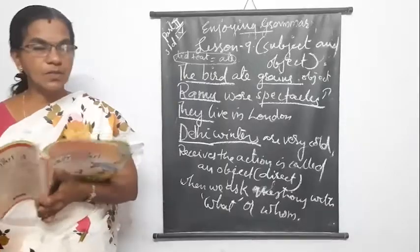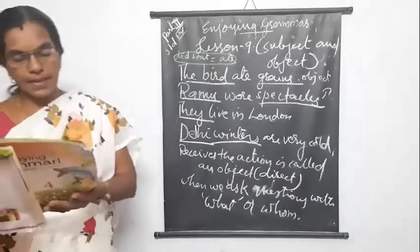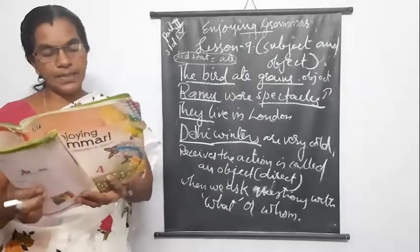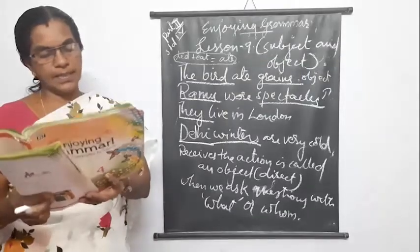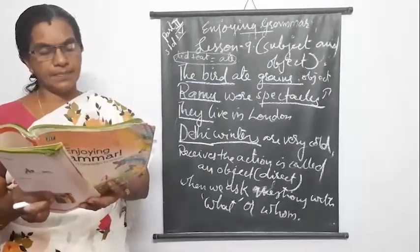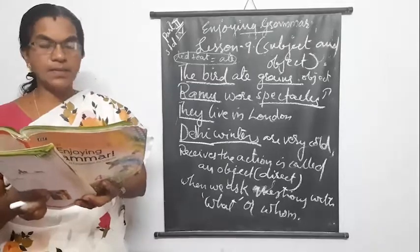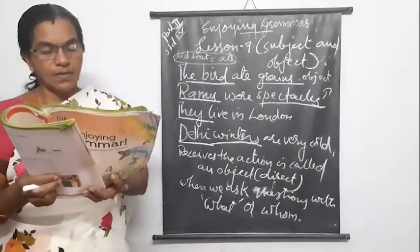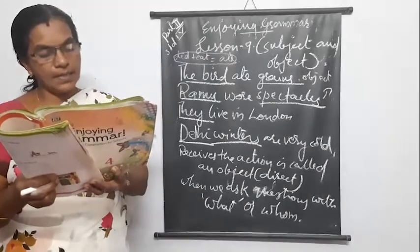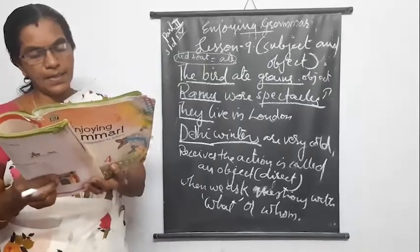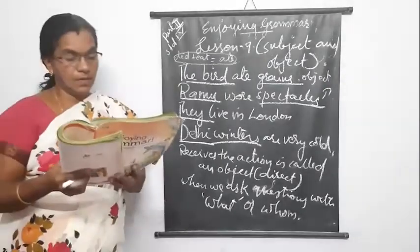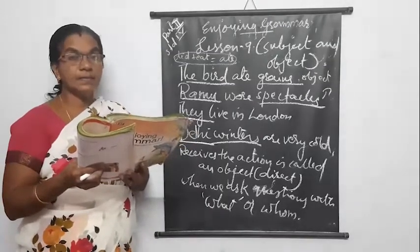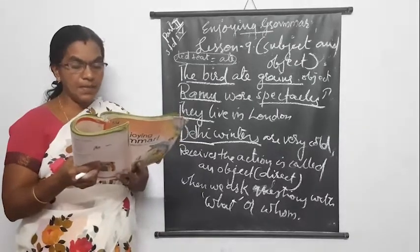Now look at the exercise. Exercise number one: underline the subject and circle the object in the sentence. The doctor examined the patient. The subject is the doctor. The object is patient. Next: a boy greeted me at the entrance of the hotel. Whom did the boy greet? Me. So a boy is the subject and me is the object.